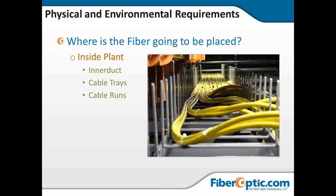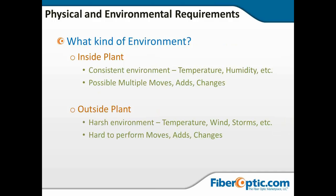Inside plant offers a consistent environment — controlled temperature, humidity, and some dust control. However, there's far more potential for moves, adds, changes, and rearranging, meaning fiber may suddenly need to be in a different place. In the outside plant it's hard to perform moves, adds, and changes, and you have a very harsh environment: temperature extremes, winds, storms, lightning, ice, backhoe operators, or tractor trailer drivers — any number of things that can cause problems.